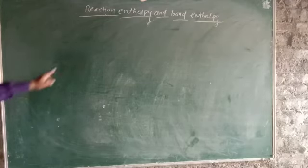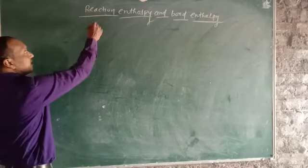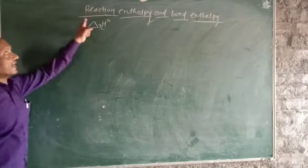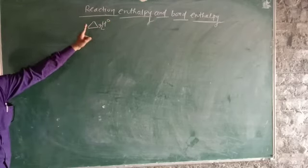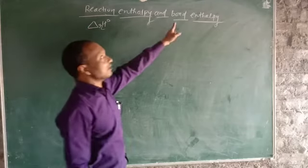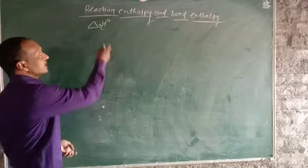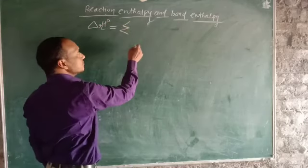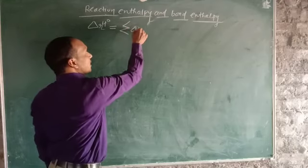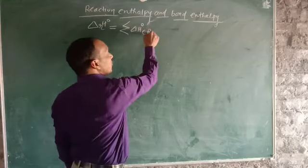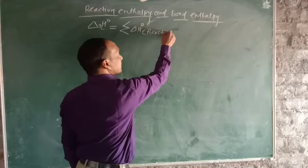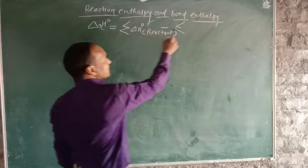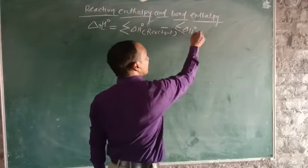You know that reaction enthalpy, which we have seen, is called delta rH°. That is ΔrH°, which is reaction enthalpy. The formula for this is: ΔrH° = summation of ΔrH° of reactants minus summation of ΔrH° of products.